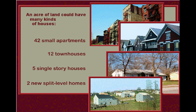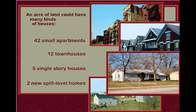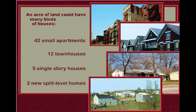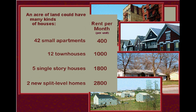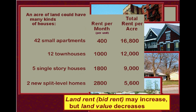An acre of land in an urban area could have a plethora of housing types. For instance, you could have 42 small apartments, 12 townhouses, 5 single-story detached houses, or two new split-level homes. As you can see, once you travel further from the CBD, there are larger and more expensive homes. Now if you look at the actual rent, the value increases as you move away from the CBD. However, looking at the overall total rent per acre — the bid rent — you can see the actual value decreases.